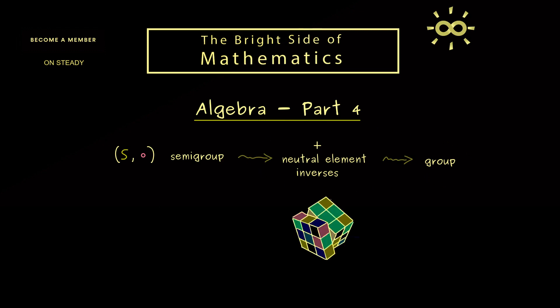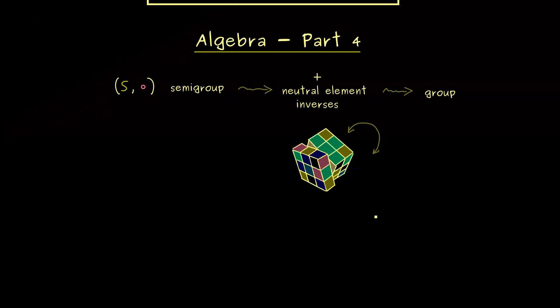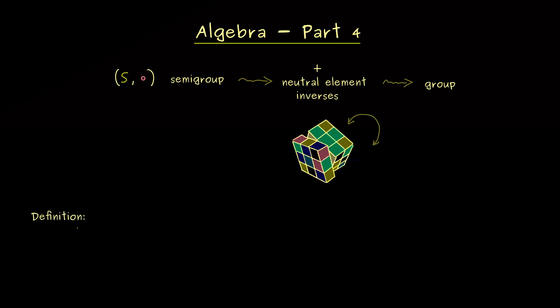So for example, if you recall the Rubik's Cube here, you know you can do movements but you can always reverse these movements. And you see, if you undo the movement, you get back to the state before, so you have the neutral element. So you already see, the group can not just describe integers but also such abstract movements here.